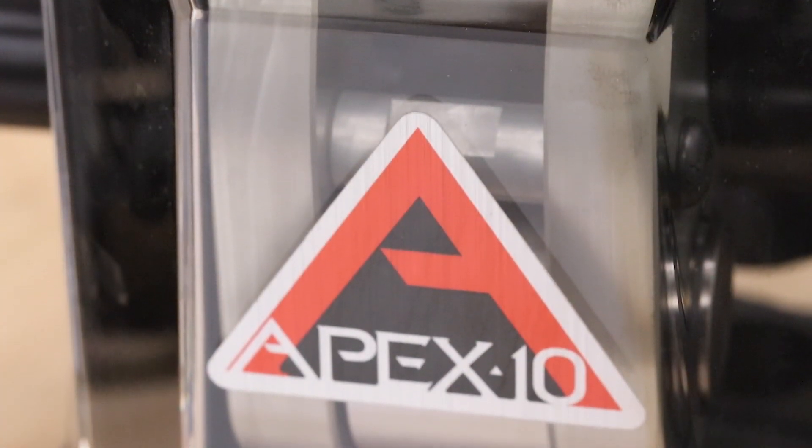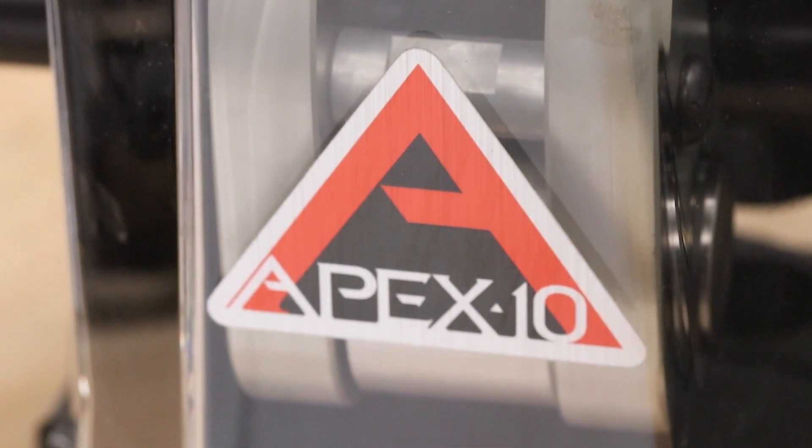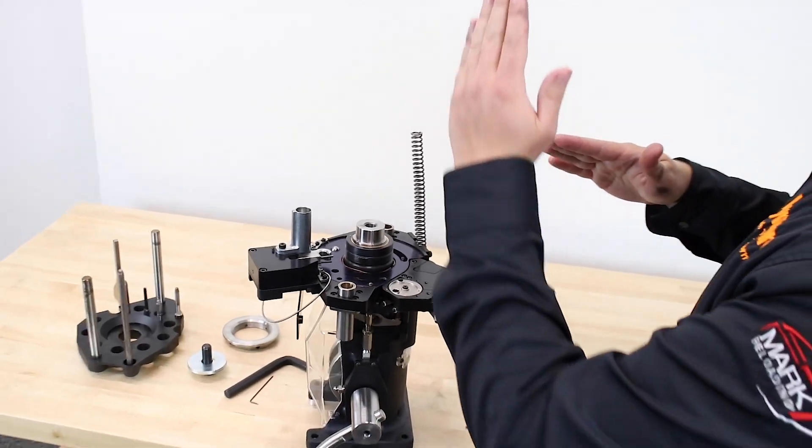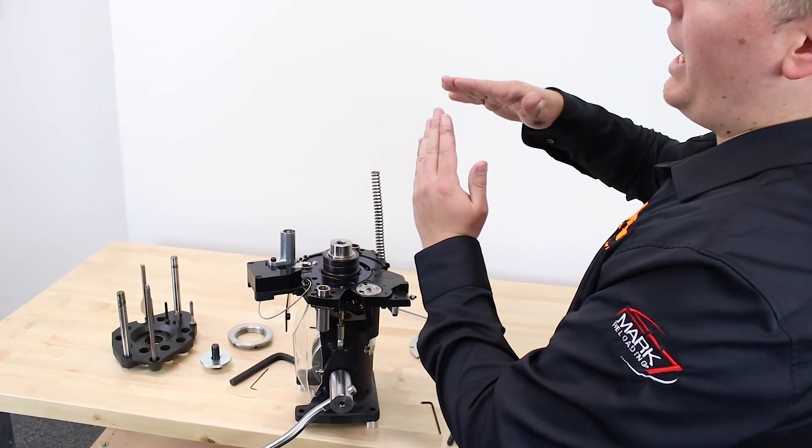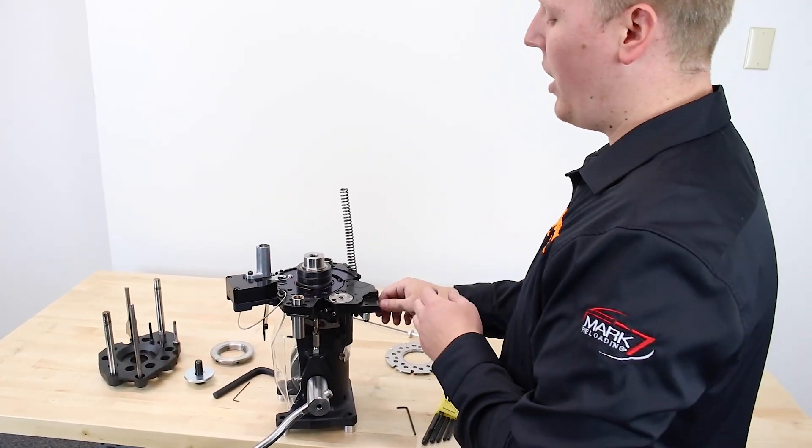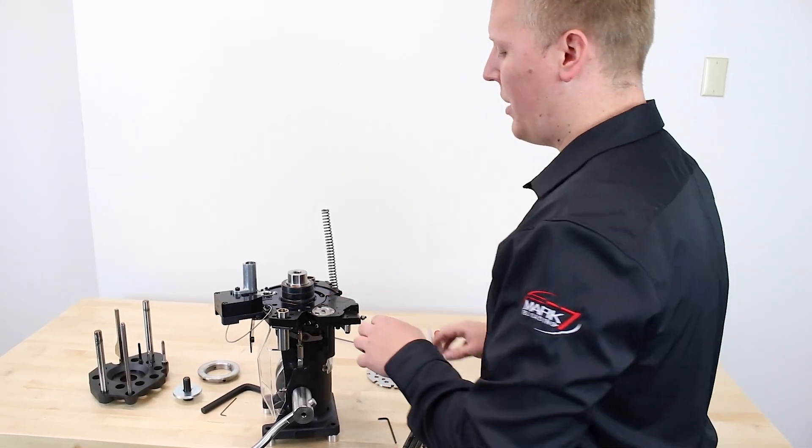Likewise, if the punch is too low in the bushing, as that primer is returned, let's say there's no case present at the time of priming, once again that could disrupt the primer.